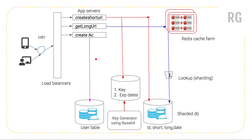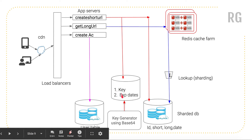Here is an architectural diagram to understand how we are going to create a URL shortener. You have phones or laptops connecting to the CDN, then to the load balancer. We have three services: create short URL, get long URL, and create account. These can be deployed in an EC2 instance or Docker and configured to scale as needed. We also have a Redis cache for key-value pairs, a user table, a Key Generator Engine that generates keys and stores them in a database with expiration dates, and another database storing the mapping between the short URL and the long URL.